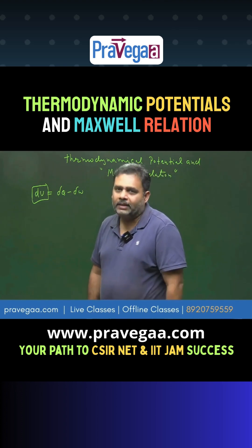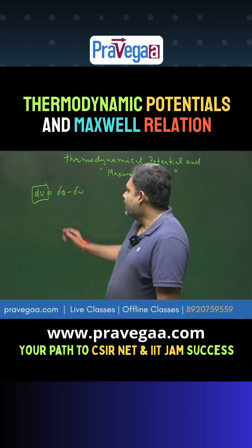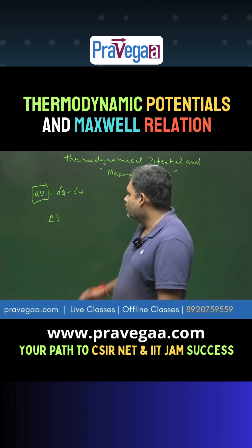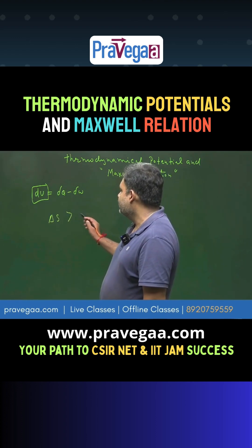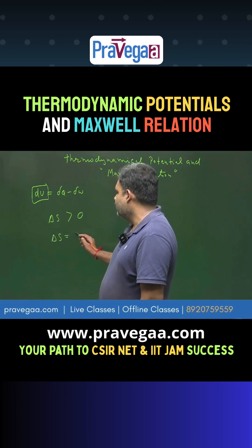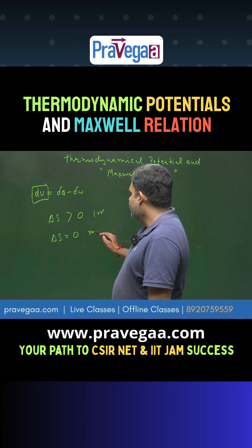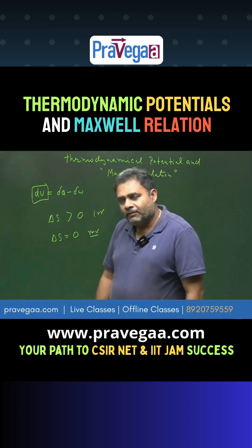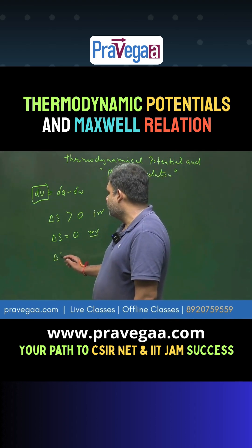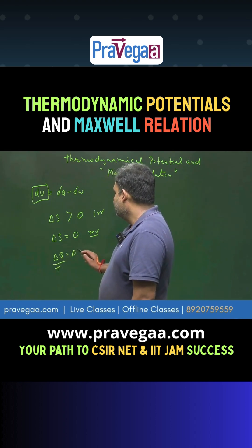The second law of thermodynamics introduces the concept of entropy. For an irreversible process, the change in entropy is greater than zero, and for a reversible process, the change in entropy is equal to zero. Once we have these conditions, we can define entropy in a thermodynamic system as dq divided by T, which gives us the change in entropy dS.